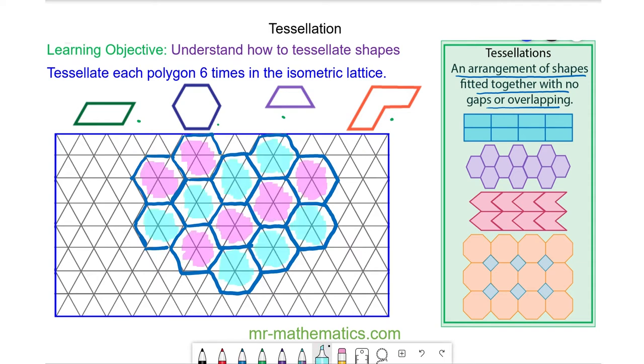You can imagine this hexagon would repeat in all directions infinitely without any gaps or any overlapping. This shows it tessellates.